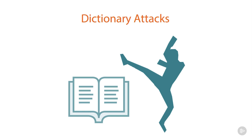'We lock out accounts after three failed attempts' — really? All of your accounts? The administrative account? Your service accounts? If I've enumerated you correctly, I know that you allow three or five failed attempts within a 15-minute period. So I can set up my program to try four attempts every 20 minutes and automate that process. Time is on my side, not on yours.